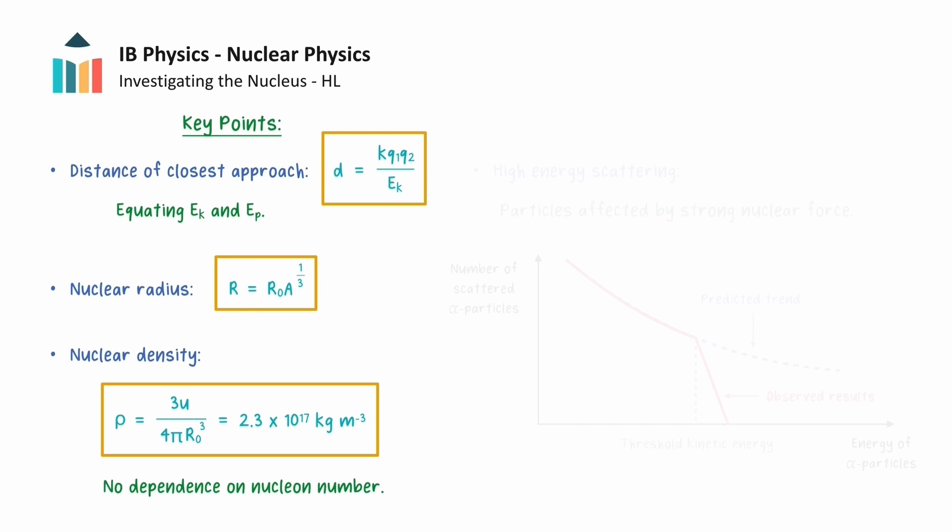Furthermore, very high energy alpha particles that reach distances close to the nucleus will be affected by the strong nuclear force, and deviate from the predicted Rutherford scattering pattern. This now concludes our video on the nucleus. Thank you for watching.